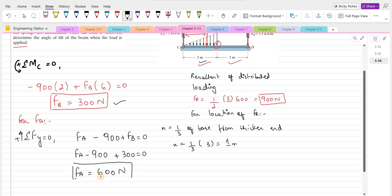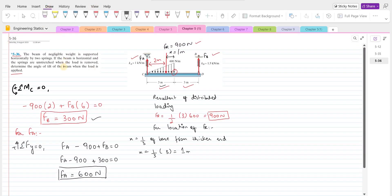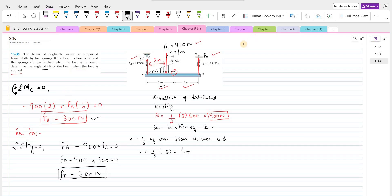So these are the forces in the springs A and B. Our objective is to find the angle of tilt. So for angle of tilt, we have to find the change in length of these two springs A and B under the applied load.